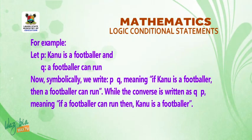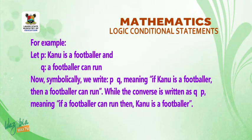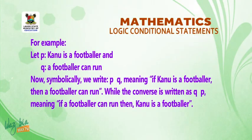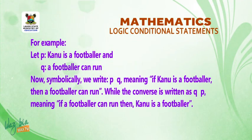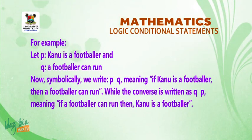For example, let p be the statement: Kano is a footballer. Q: a footballer can run. Symbolically we write p implies q, meaning 'if Kano is a footballer, then a footballer can run.' But the converse is written as q implies p, meaning 'if a footballer can run, then Kano is a footballer.'